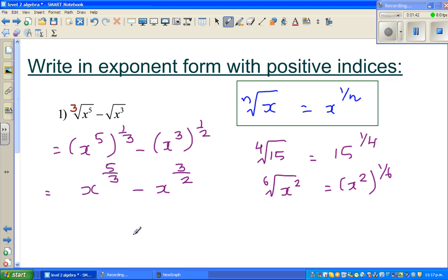Okay so here you cannot simplify this anymore because it is minus here. So write in exponent form with positive indices. So I think this is the final answer. Okay so I was a bit doubtful about this answer but I think I'm right. You can't simplify this any further. So this is the answer.